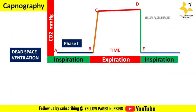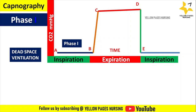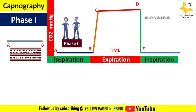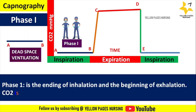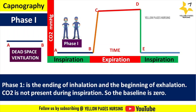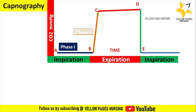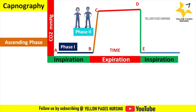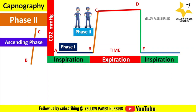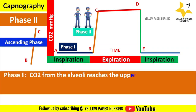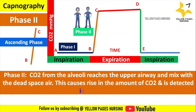Phase one, from A to B, is called dead space ventilation, because there is no gas exchange in the upper airway — the dead space. In phase one, inhalation ends and exhalation begins; carbon dioxide is not present during inspiration, hence the baseline is zero. Phase two, from B to C, is the ascending phase, where carbon dioxide from the alveoli reaches the upper airway and mixes with dead space air, causing a rise in detected CO2.